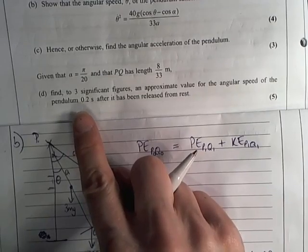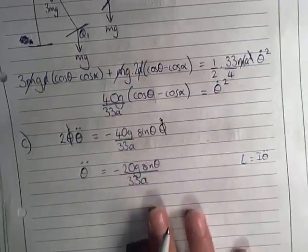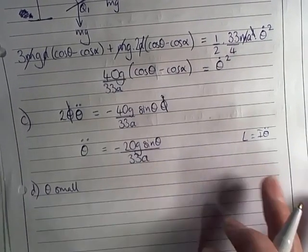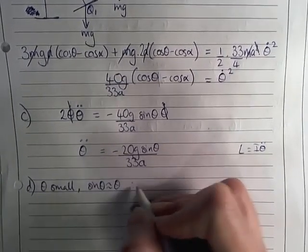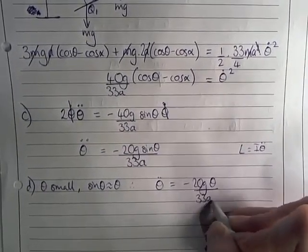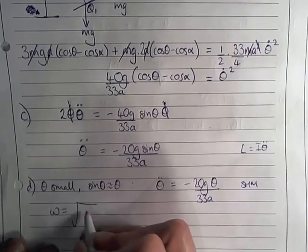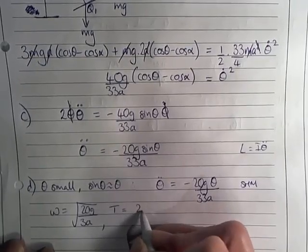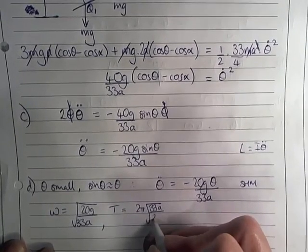So I am interested in the period of the motion. I am going to say that as theta is small, sine theta is roughly theta. Therefore, theta double dot is equal to minus 20g theta over 33a. Simple harmonic motion. So therefore omega is going to be root 20g over 33a, and therefore T is going to be 2 pi root 33a over 20g.